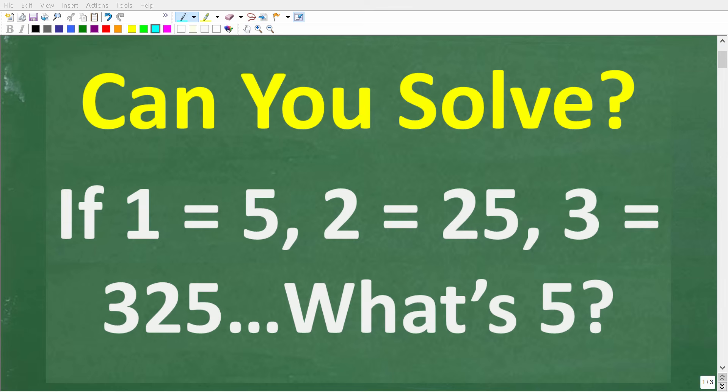Some people that know a lot of math are not going to be able to solve this problem, while other people that don't know a lot of math are going to see exactly how to get the right answer. So let's take a look at the question. If 1 equals 5, 2 equals 25, and 3 equals 325, what's 5?